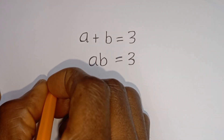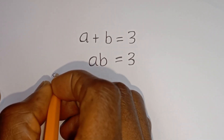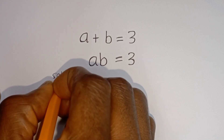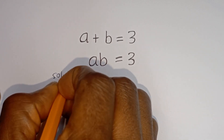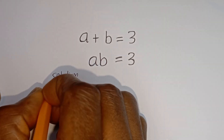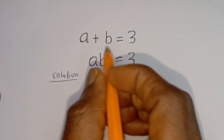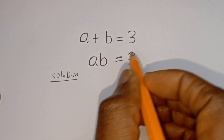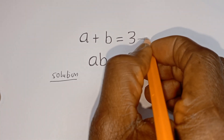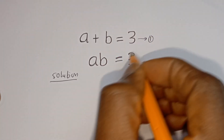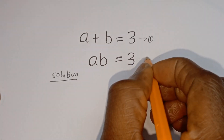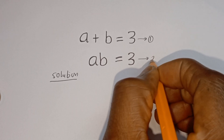Solution. A plus B is equal to 3 — let's call this equation 1. A times B is equal to 3 — let's call this equation 2.